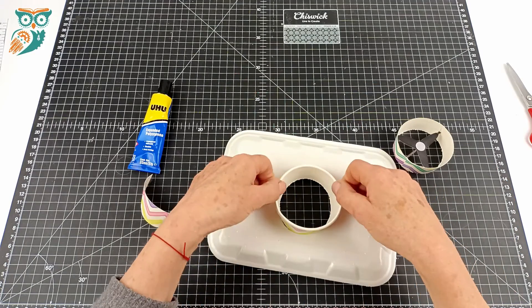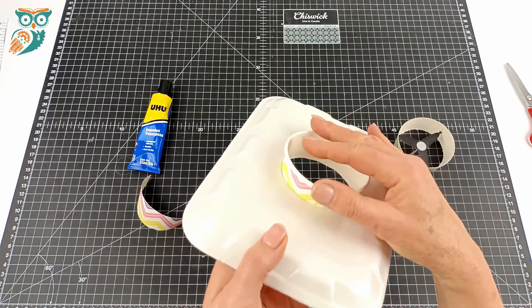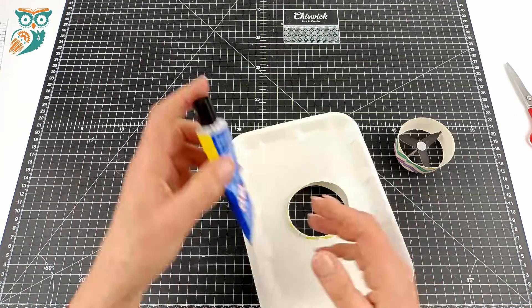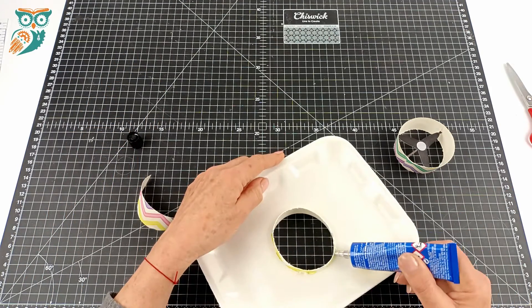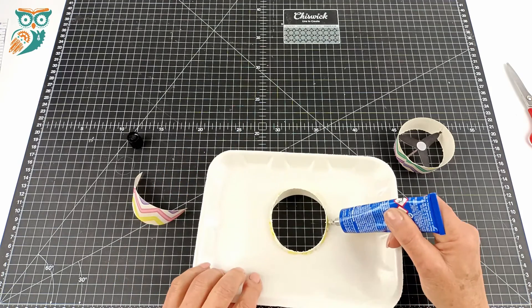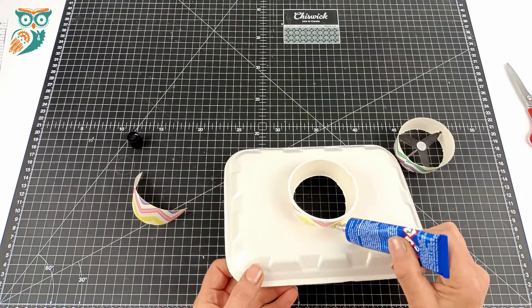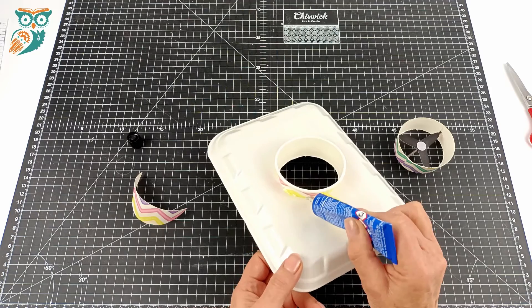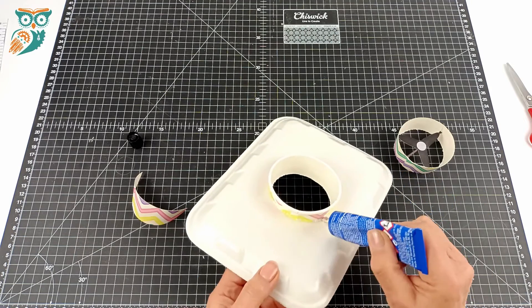Because we're using the polystyrene tray, we're using a polystyrene glue. If you're using a cardboard tray you could just use regular white glue. And now we're just going to glue that ring in place in the middle. You want to make sure that's nice and secure so when you blow air through that hole it doesn't come apart.